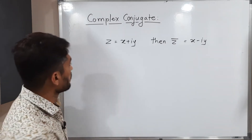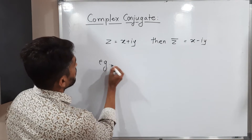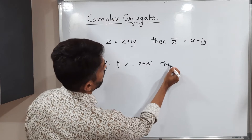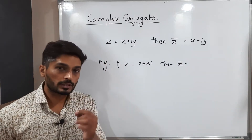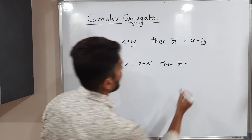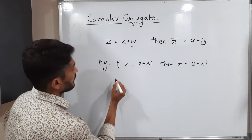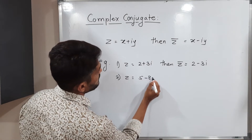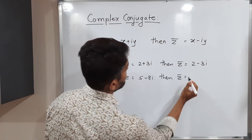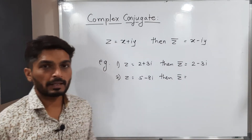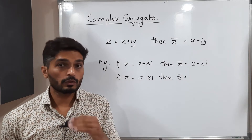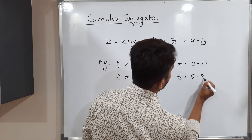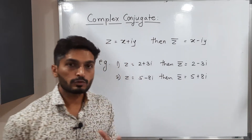Let us discuss a few examples. If z is equal to 2 plus 3i, then its complex conjugate is simply 2 minus 3i — we just change the sign. For the second example, if z is equal to 5 minus 8i, then z-bar is equal to 5 plus 8i, because the imaginary part had a negative sign, so we take a positive sign.